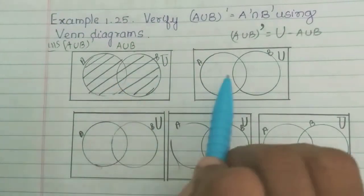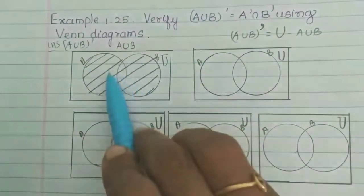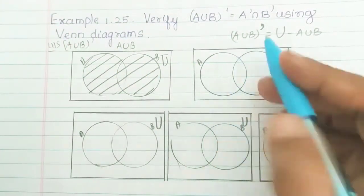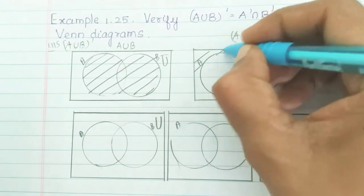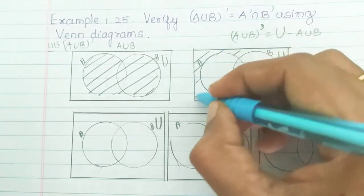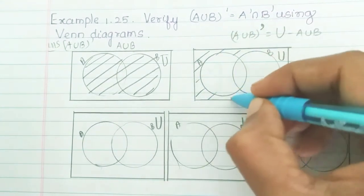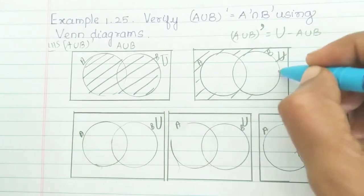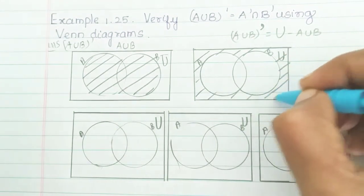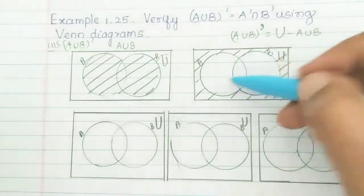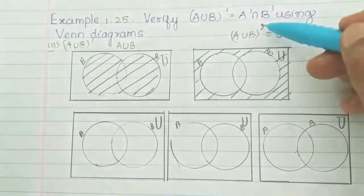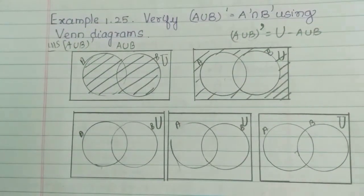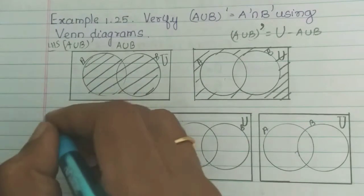So that means this is the opposite. If you have any shade, we will shade the remaining portion. That means the outer portion of the universe will shade. This is A union B whole dash. A union B will shade — don't shade A union B. That's better.